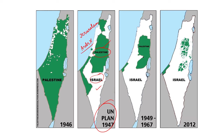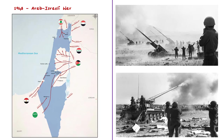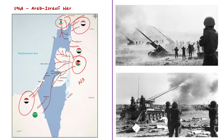Following this UN partition plan, violence erupted in Palestine. On May 14, 1948, Israel declared its independence. On the very next day, the neighboring Arab countries — Jordan, Egypt, Syria and Iraq — launched a full-scale war against Israel to support the Palestinian Arabs. This conflict resulted in displacement of thousands of Palestinians and marked the beginning of a series of wars between Israel and its neighbors.